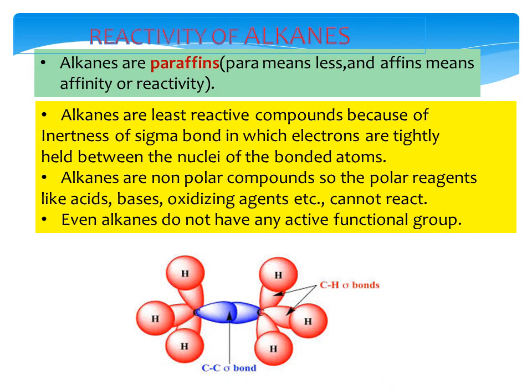As far as the reactivity of alkane is concerned, alkanes are paraffins — meaning they are less reactive. The basic reason for their less reactivity is the inertness of the sigma bond. Sigma bond is formed by linear or axial overlap of orbitals such as s-s overlap, s-p overlap, or px-px overlap, in which electron density is concentrated between the nuclei of the two bonded atoms. The sigma bond is much stronger than a pi bond. Alkanes are non-polar compounds, so polar reagents like acids, bases, and oxidizing agents cannot react with them. Alkanes also do not have any active functional groups.